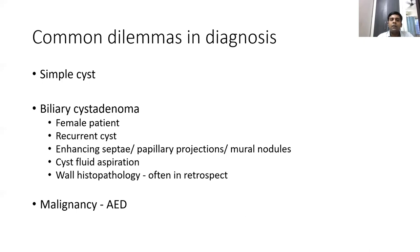Common diagnostic dilemmas include differentials such as a simple cyst, biliary cystadenoma, and sometimes a malignancy — more common with alveolar echinococcosis. When you encounter a cyst in the liver more commonly in a female patient that has recurred after surgery, one should suspect biliary cystadenoma. Imaging features to consider are enhancing septa, papillary projections or mural nodules, and sometimes cyst fluid aspiration is needed to check for scolices.